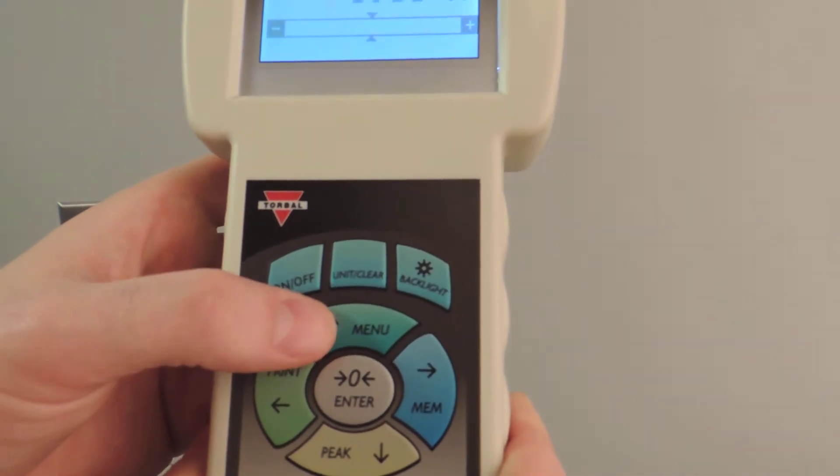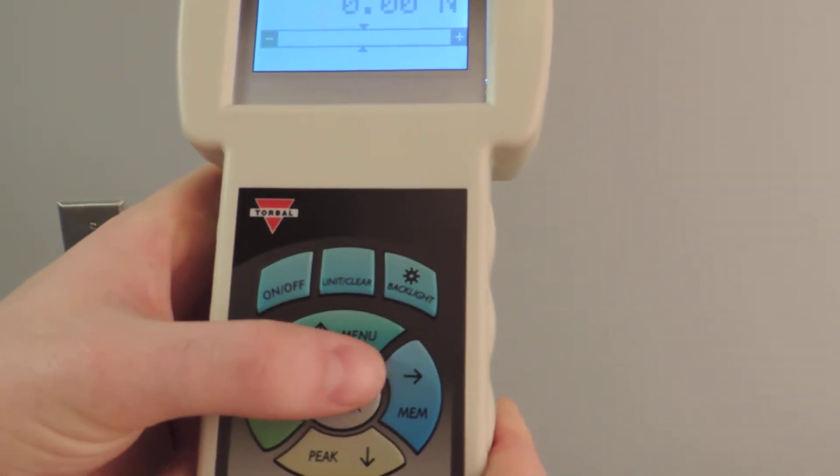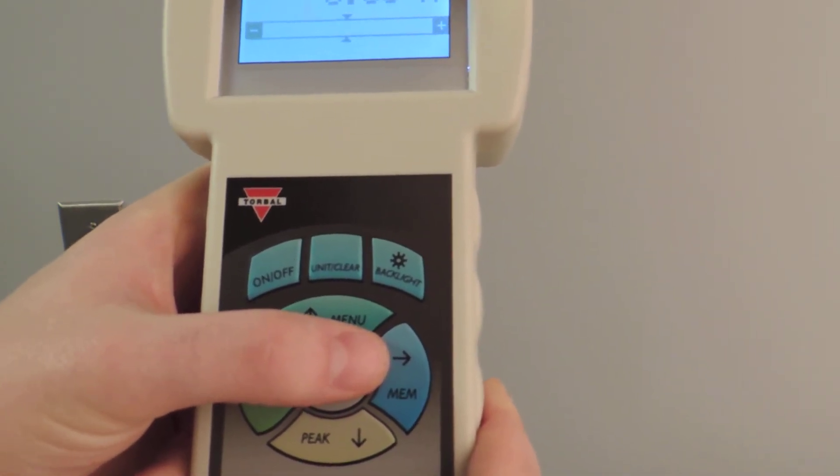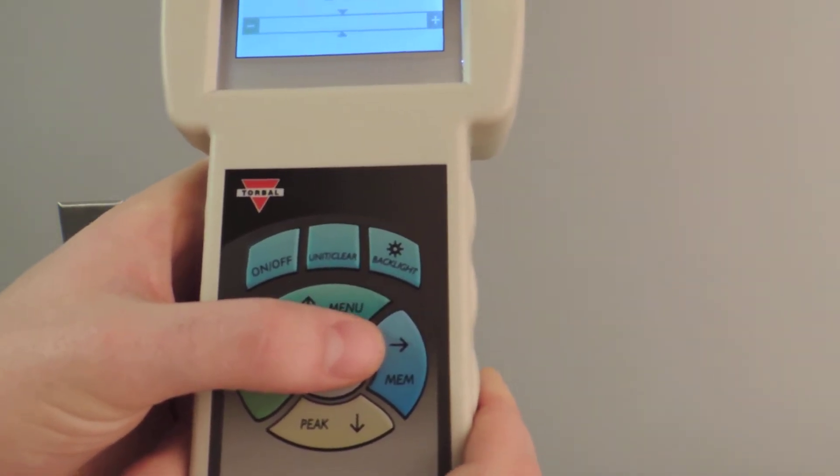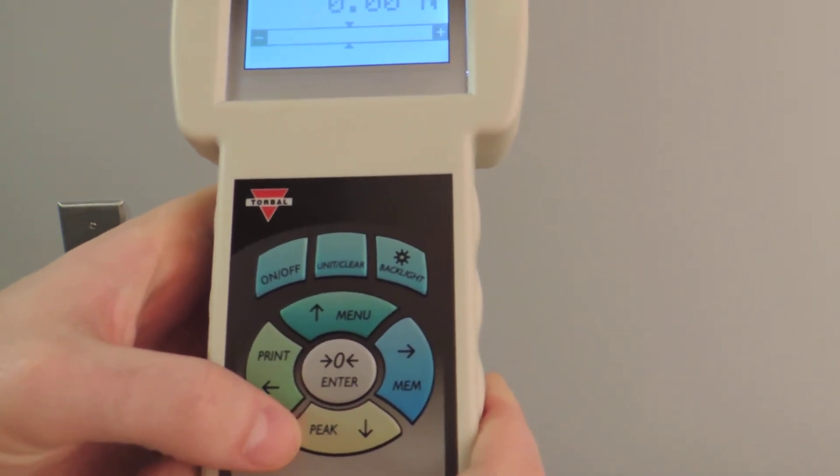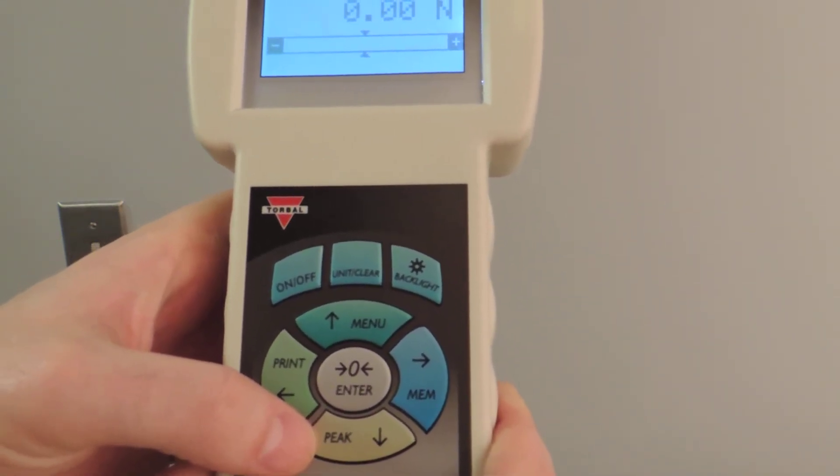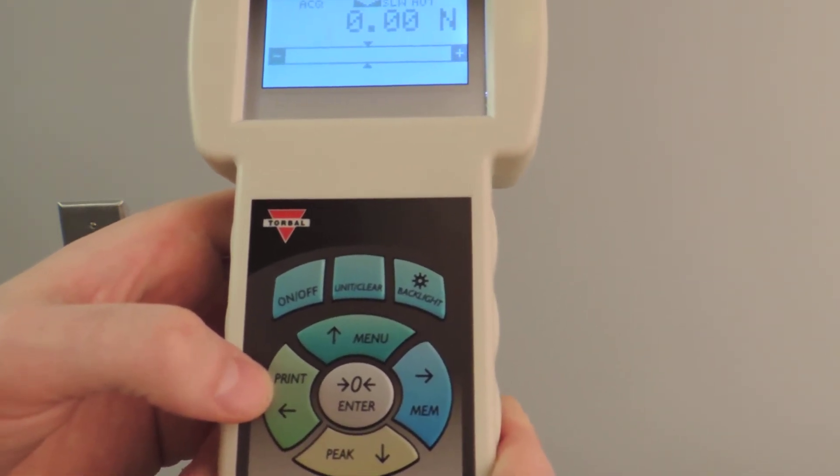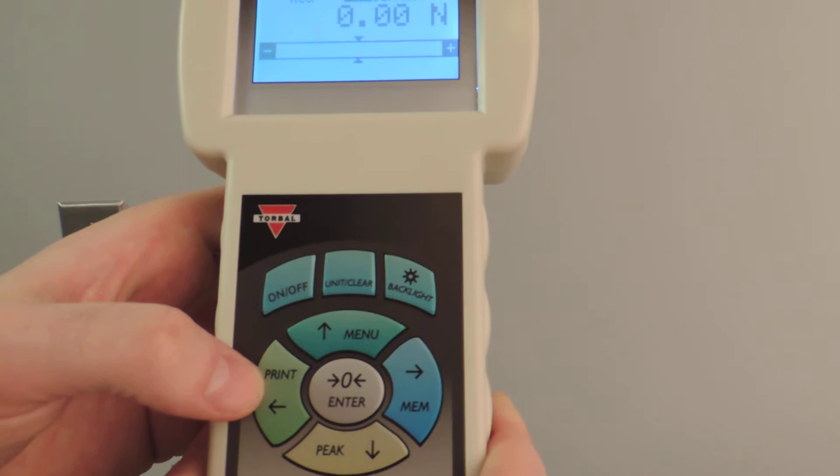Down below we have a menu button. We have a memory button which can both take samples as well as access the currently saved statistics. We have a peak measurement button which is quick access to both compression and tension peak measurements, and we have a print or send statistics button to a computer.